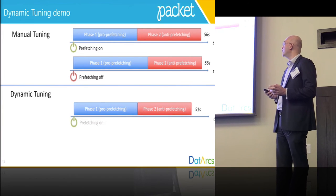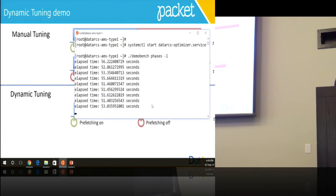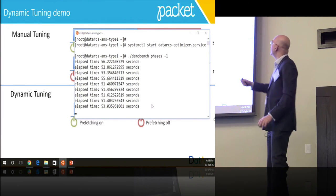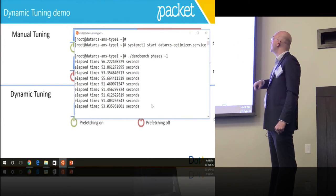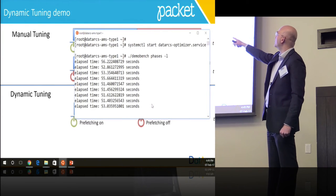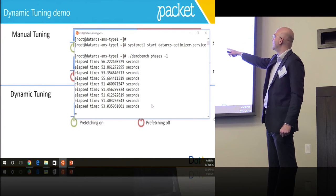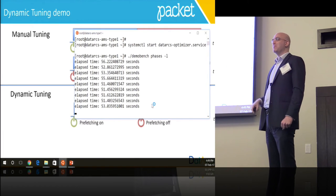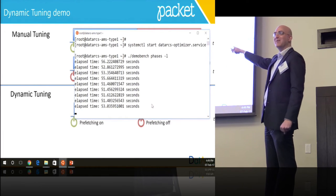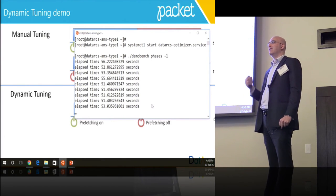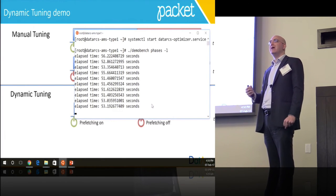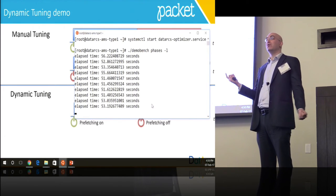We asked whether we can do better. What I did here is I started our daemon in the background, and then ran the benchmark in a loop. You can see the results going down from 56 — we can see 51. Our software automatically detected the phases of the application, and it outperformed the manual method.